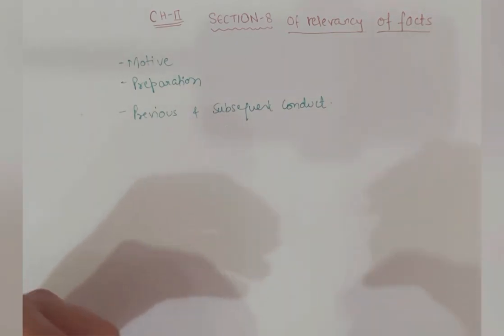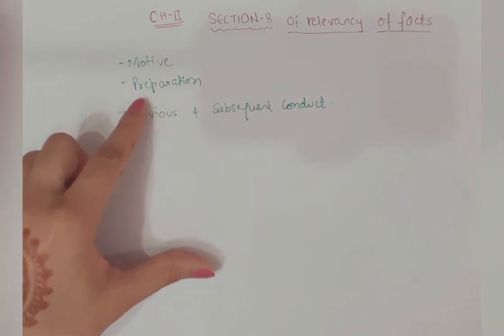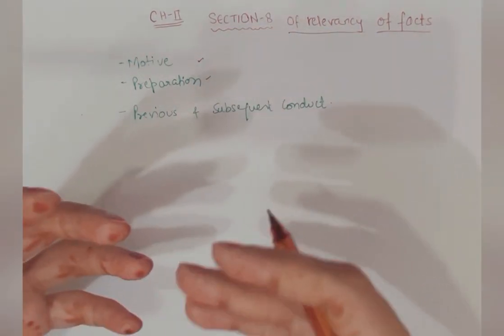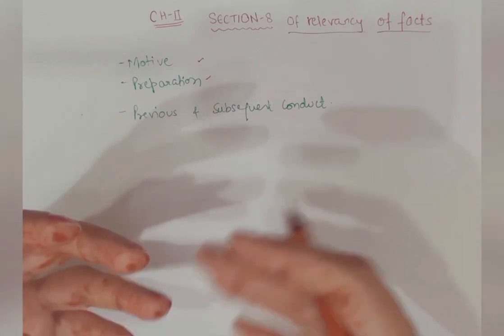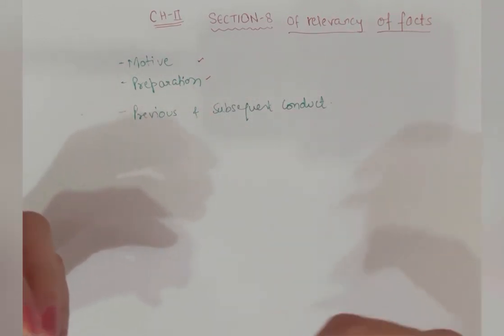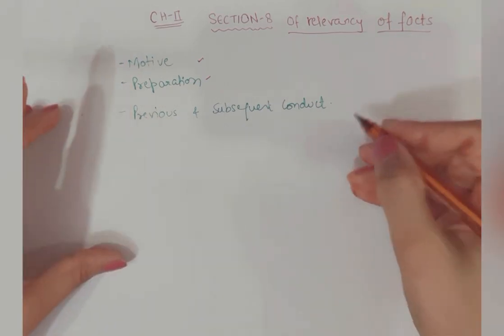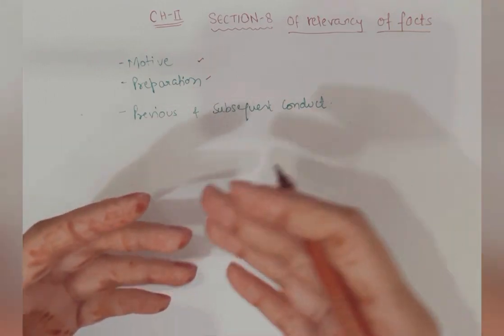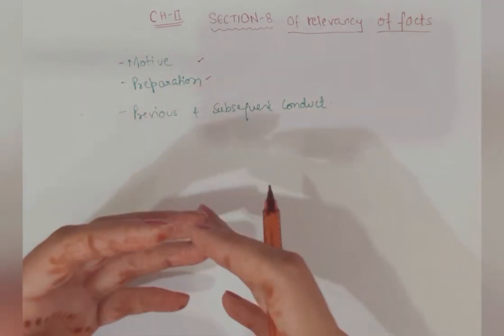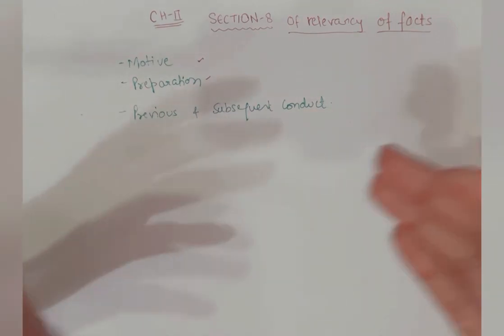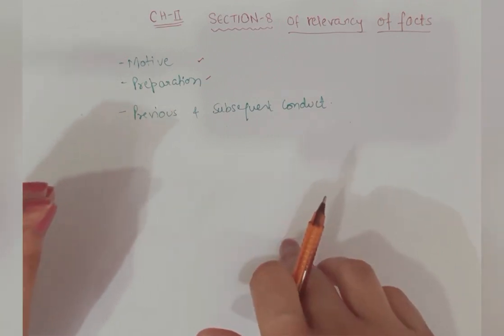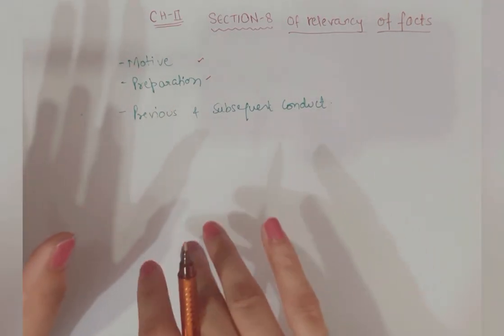Now any fact which shows or constitutes motive or preparation will be relevant. Any fact which creates or shows motive, that fact is relevant. If A said 'I will kill B', this statement is manifesting motive. A had quarrel with B. Later B died. This quarrel is relevant in constituting motive.